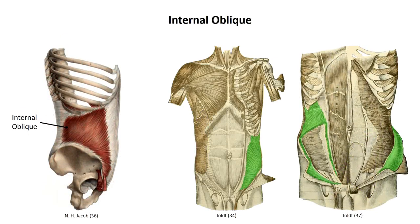Deep to the external obliques are the internal obliques. Posteriorly, the fibers are continuous with the thoracolumbar fascia investing the erector spinae muscle group. The fibers project anterolaterally in a radiating pattern: superior fibers attach to the lower ribs, intermediate fibers run more or less transversely and transition into an aponeurosis fusing along the midline, and inferior fibers insert along the pubic crest and contribute to the inguinal canal. The internal obliques contribute to trunk flexion, and unilateral contraction produces ipsilateral rotation of the trunk.